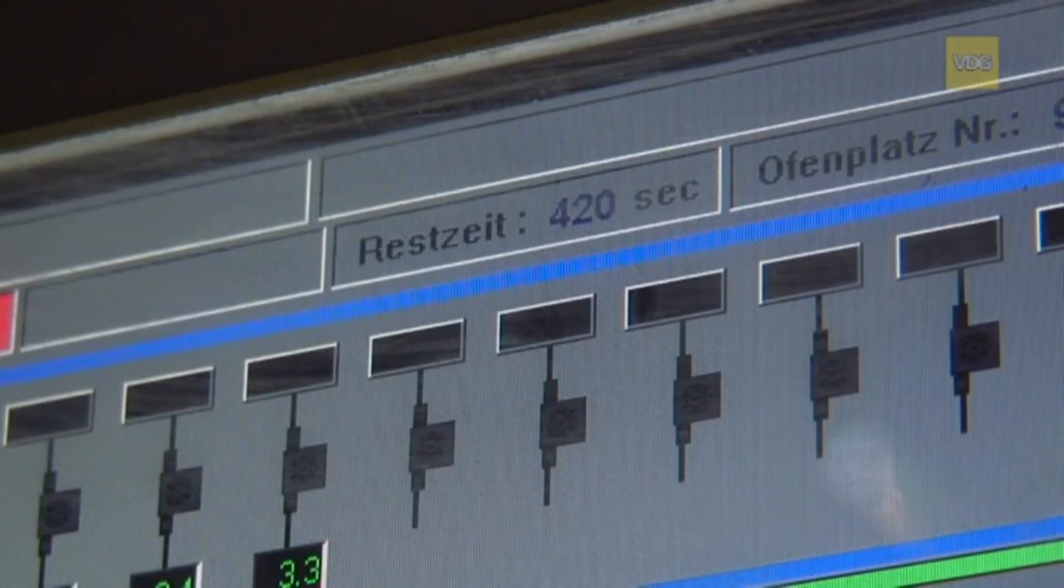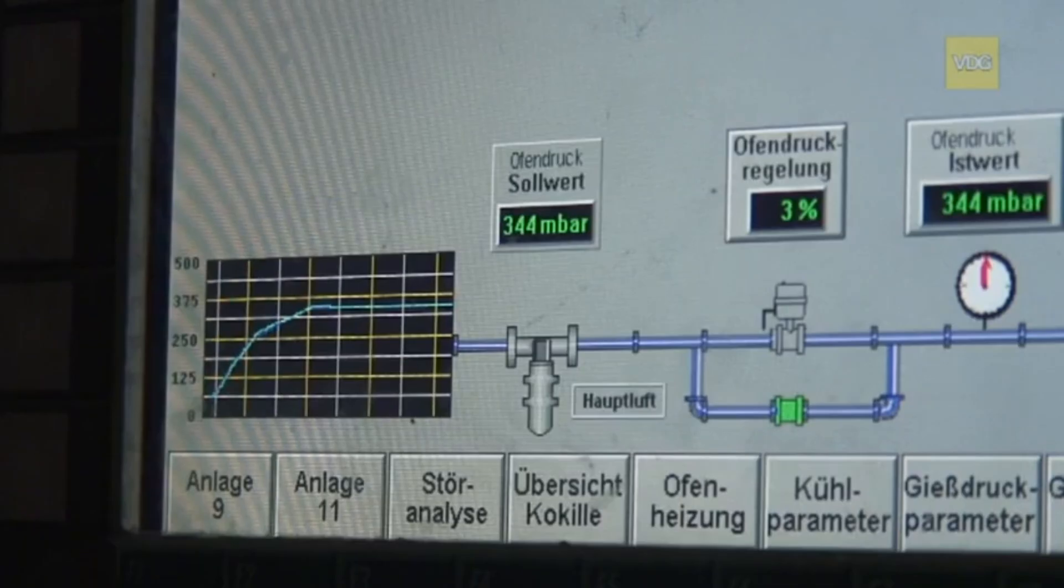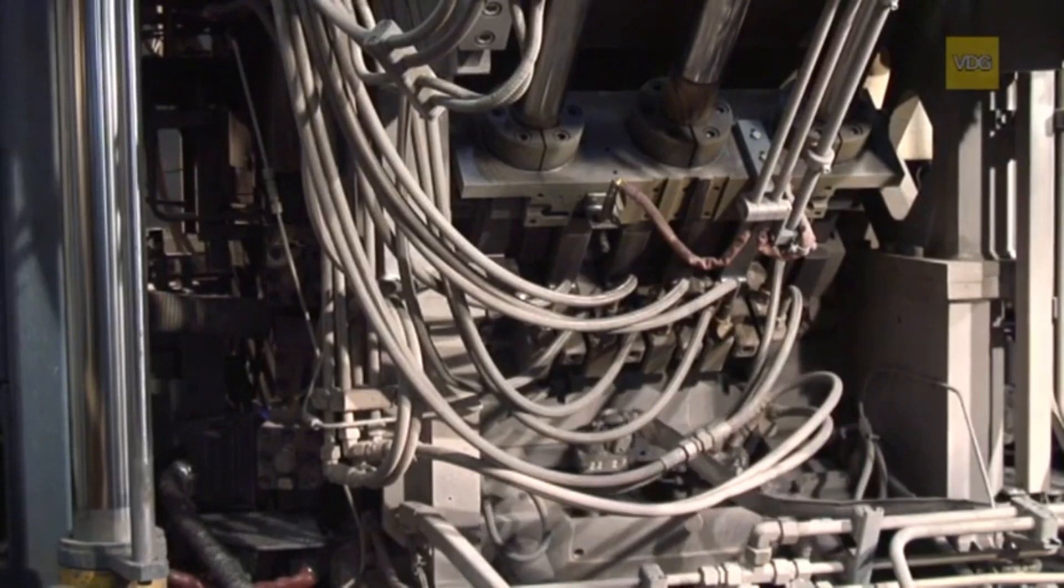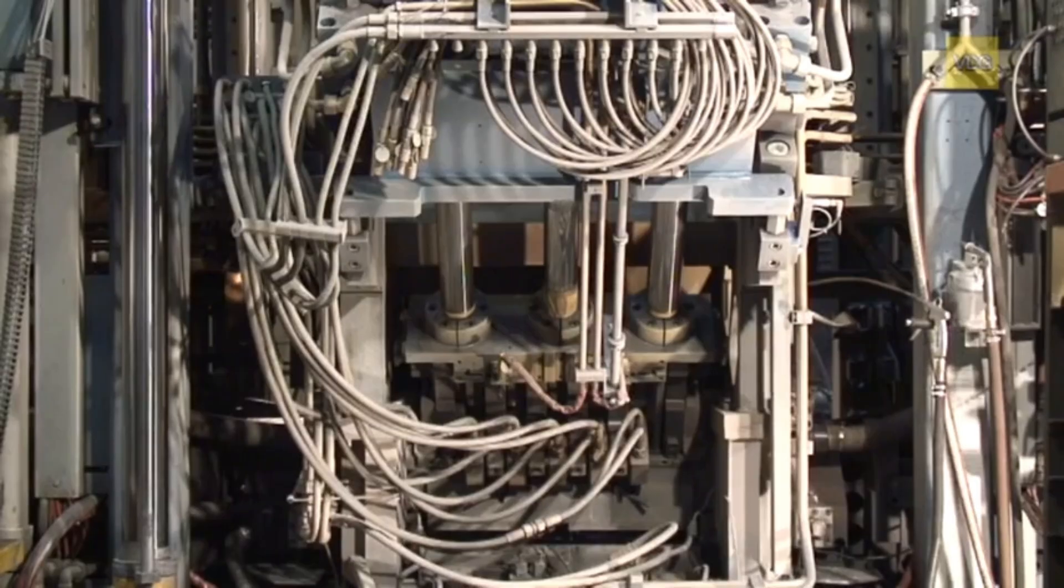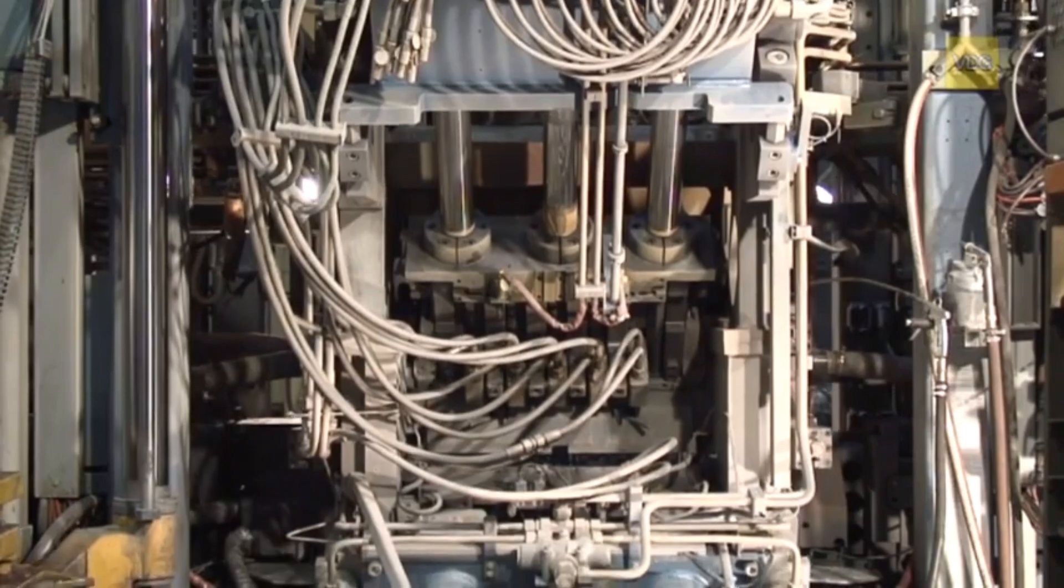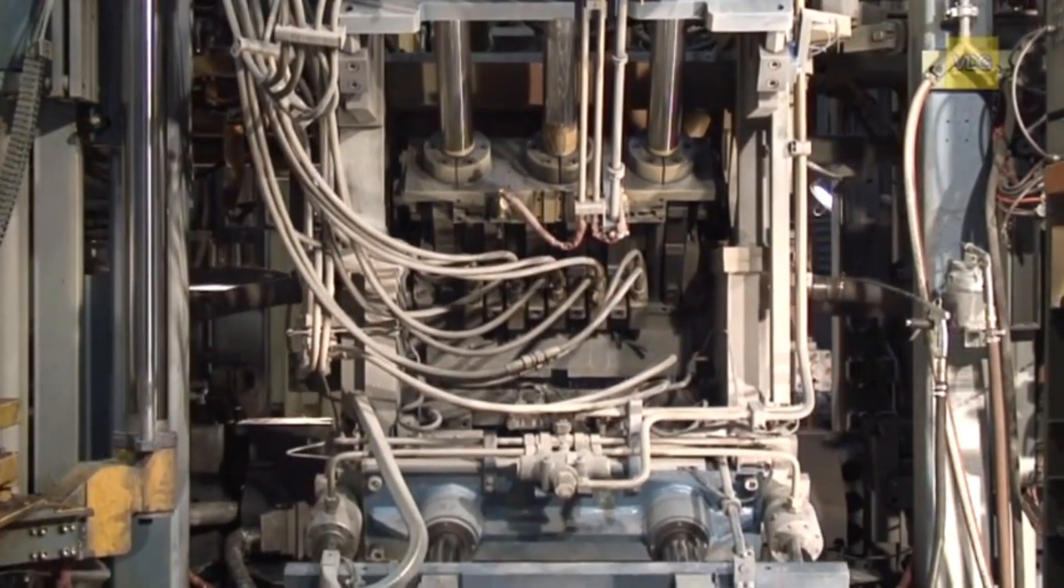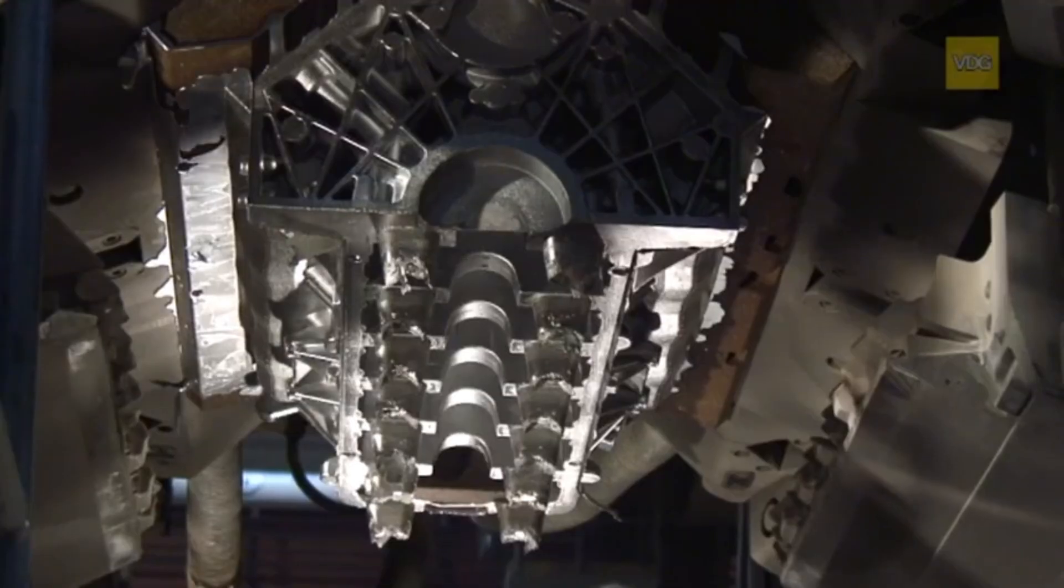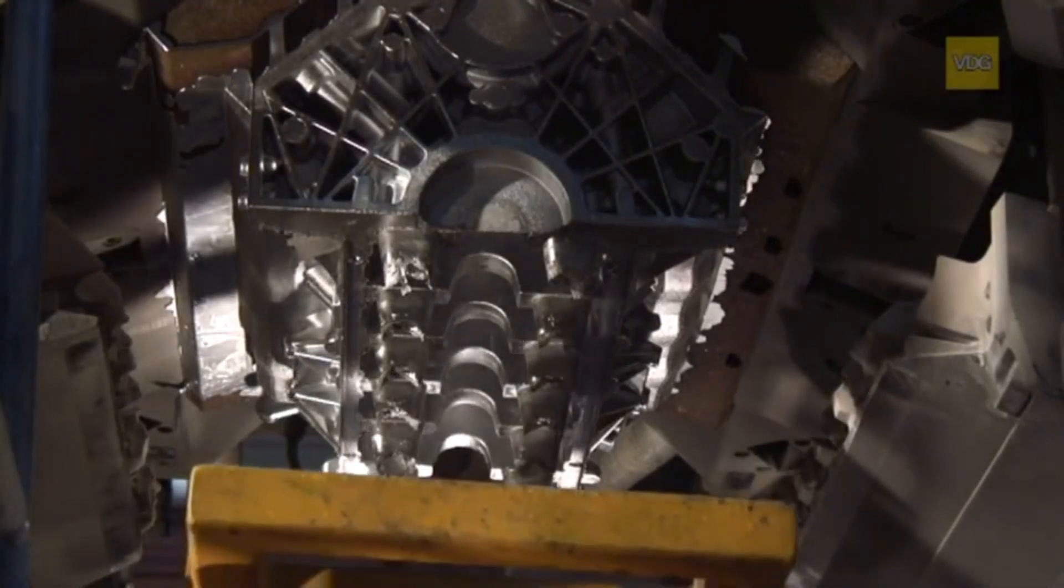The entire low-pressure casting station can be visualized on the display of the control cabinet, where the casting curve illustrates the filling process. When the mold filling and solidification are complete, the applied casting pressure of 0.3 bar is reduced. The mold then opens automatically, and the cylinder block is removed by the side sliders.